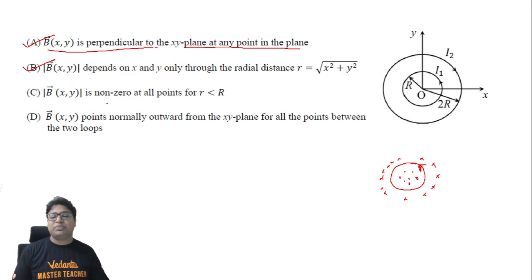Now option C says that B is non-zero at all points for R less than R, meaning the interior region of the smaller loop. My argument is this: at center we know that the field is inwards, but if I move to a point which is very close to this loop carrying anti-clockwise current, the element situated nearest to this point will create a very large value of magnetic field here.